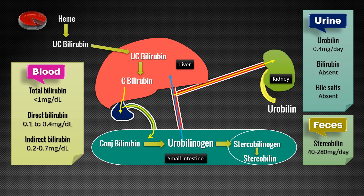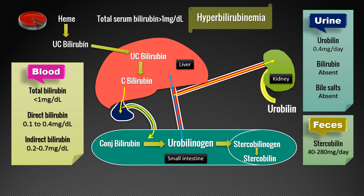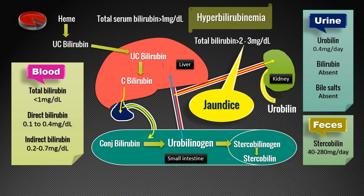Based on these investigations, you should know two terminologies: hyperbilirubinemia and jaundice. Whenever total serum bilirubin exceeds 1 mg/dL, we call it hyperbilirubinemia. When this level exceeds more than 2.5 mg/dL — or 2 to 3 mg/dL — we use the term jaundice. Jaundice is defined as yellowish discoloration of the skin, mucous membrane, tongue, and sclera.